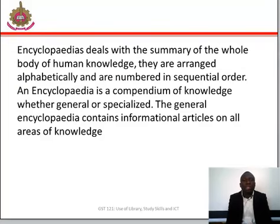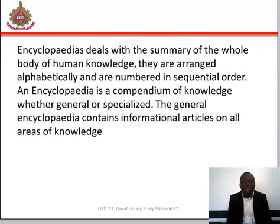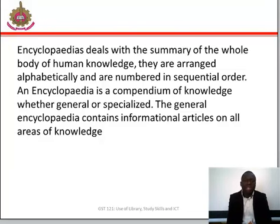An encyclopedia deals with the summary of the whole body of human knowledge. They are arranged alphabetically and in numbered sequential order. An encyclopedia is a compendium of knowledge, whether general or specialized. The general encyclopedia contains informational articles on all areas of knowledge.